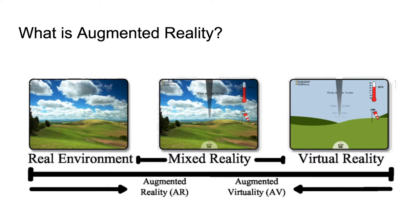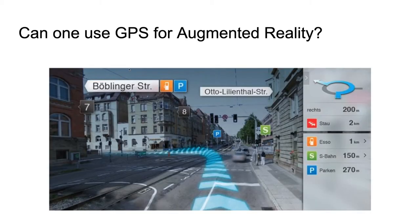One way we can augment the real world with artificial content is by using GPS. A simple example is the Mercedes navigation system, which augments the real-world see-through view with street names and additional information about the world the driver is experiencing.